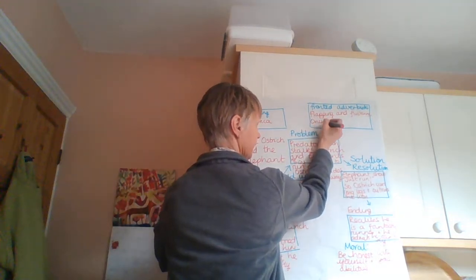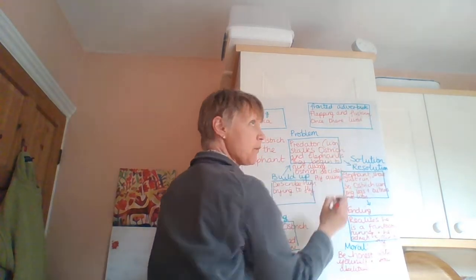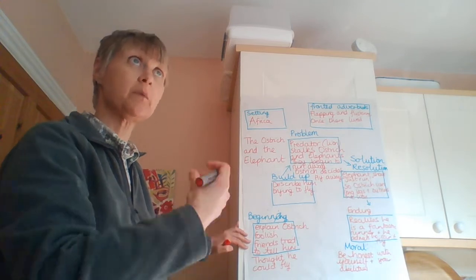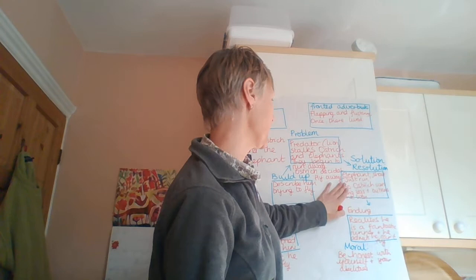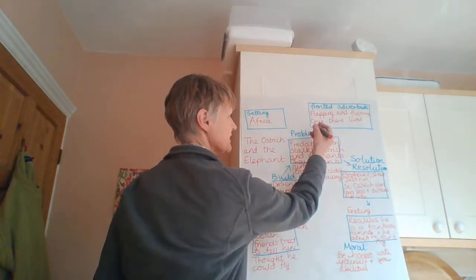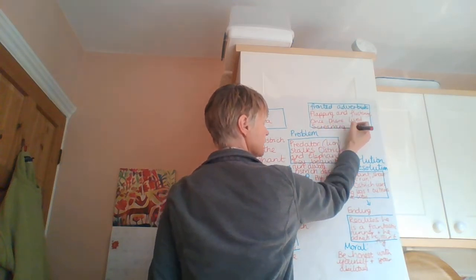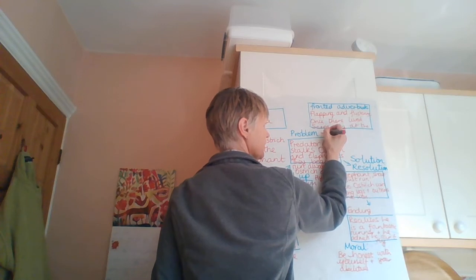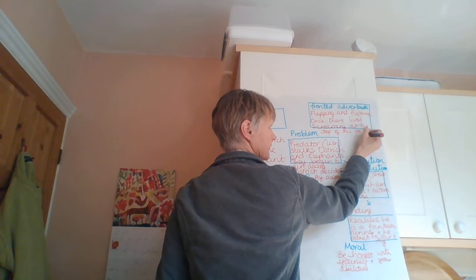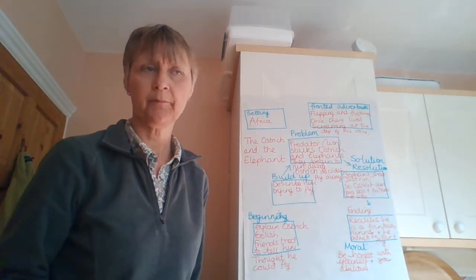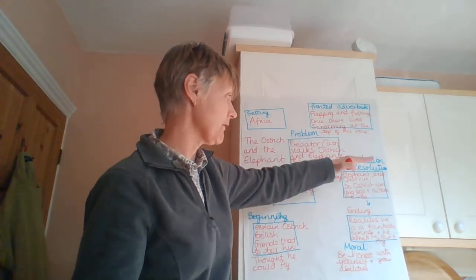I might have here, I might have once there lived. Or once there was a foolish ostrich, or once there was an ostrich that was very foolish. Where else might I have one? Screaming at the top of his voice, just, the elephant cried, just run, screaming at the top of his voice. This would be another how. So, plan about three fronted adverbials that you know you're going to start your paragraphs with.